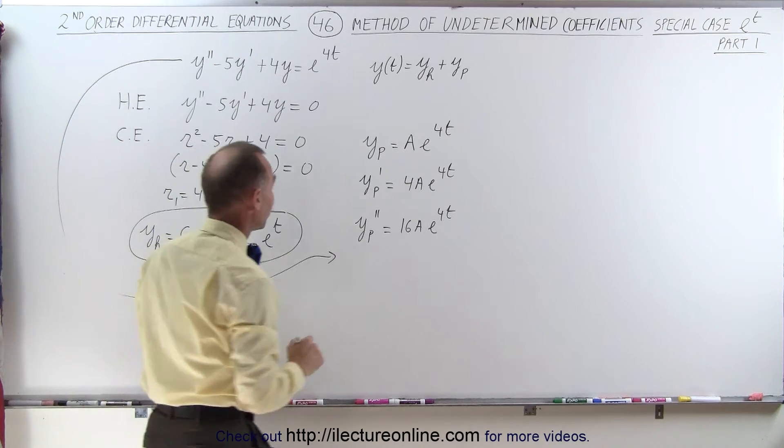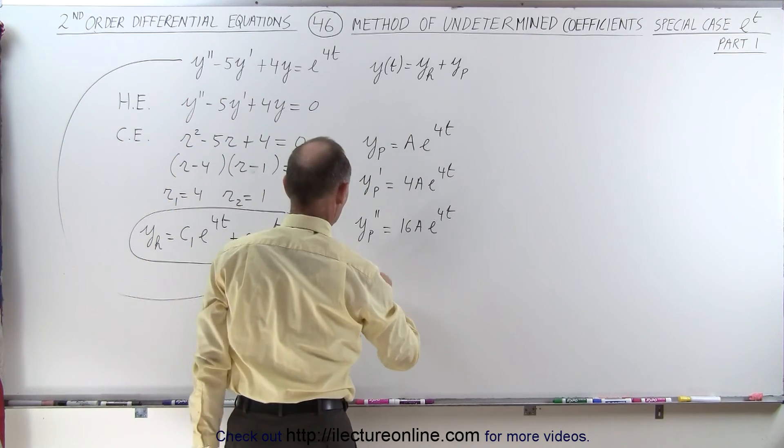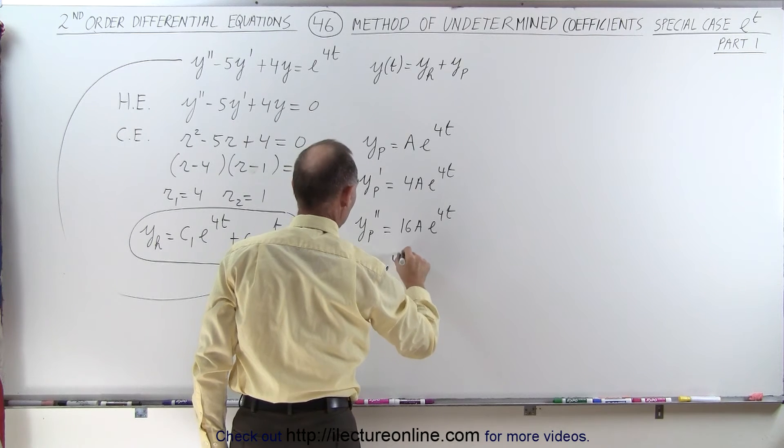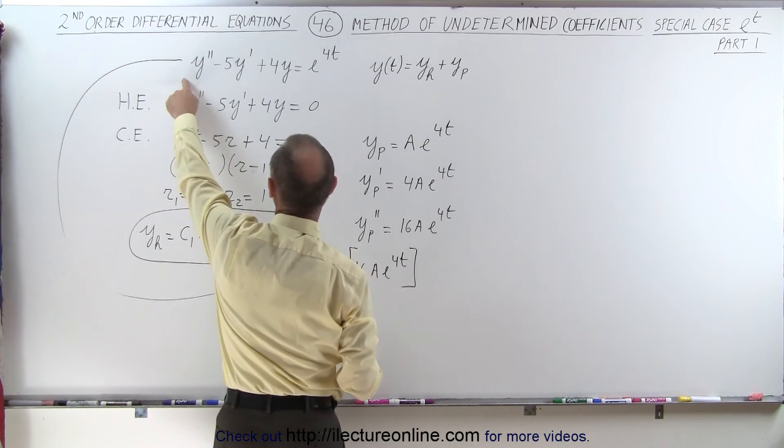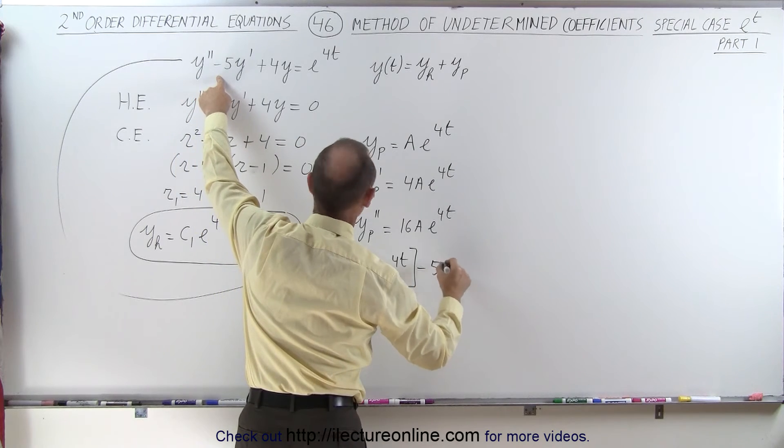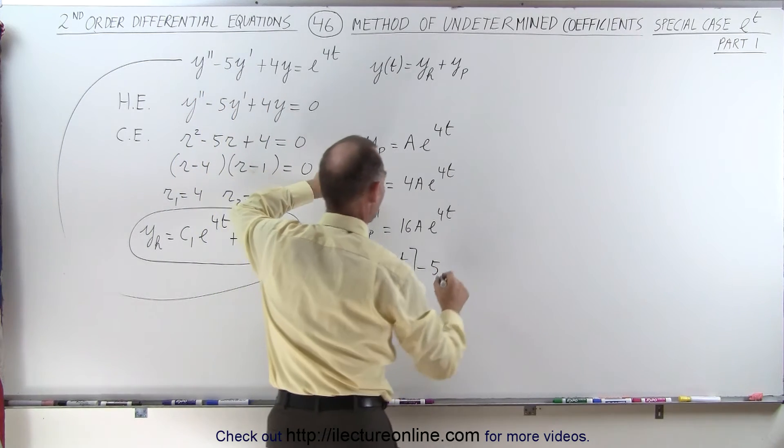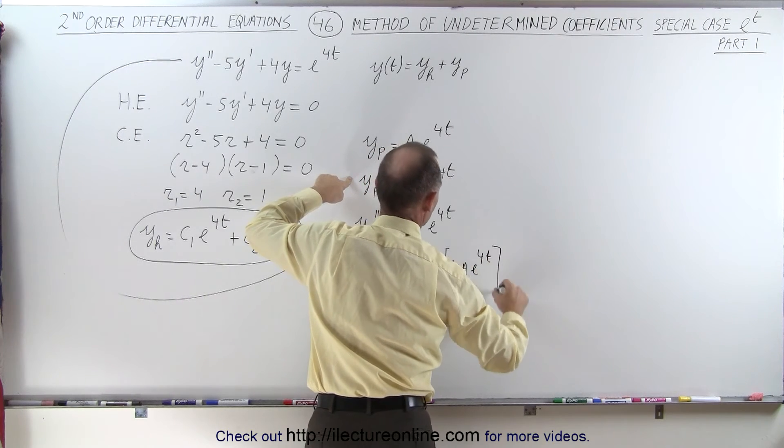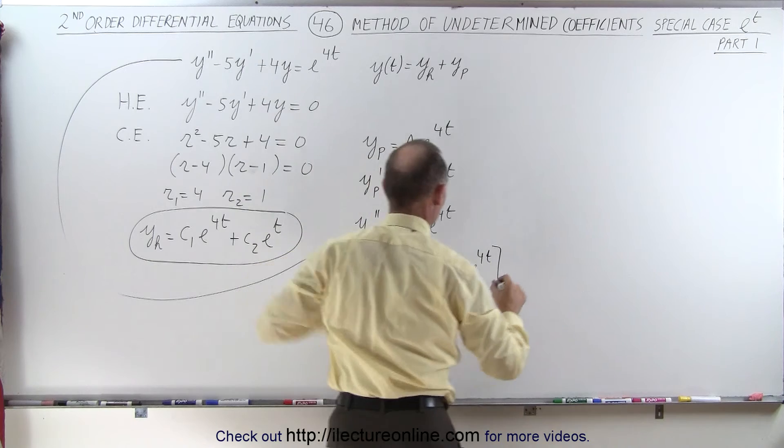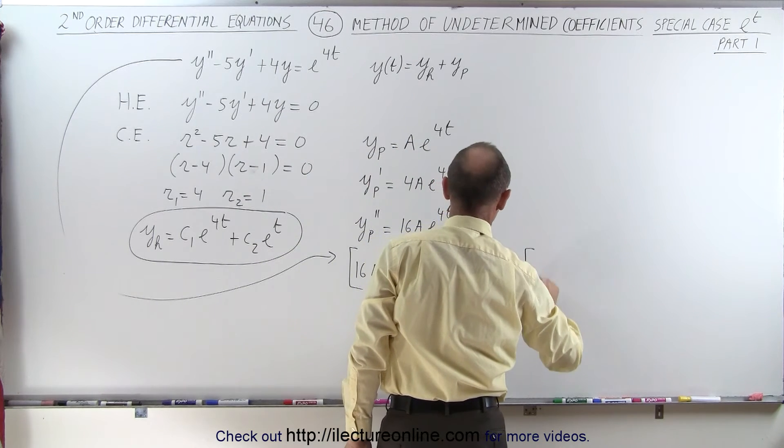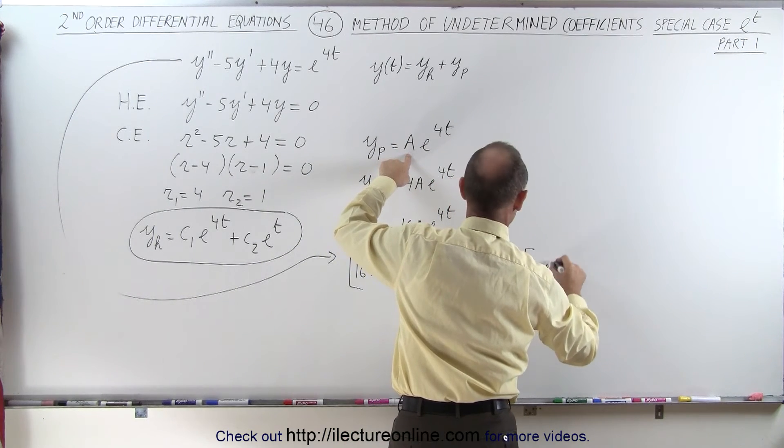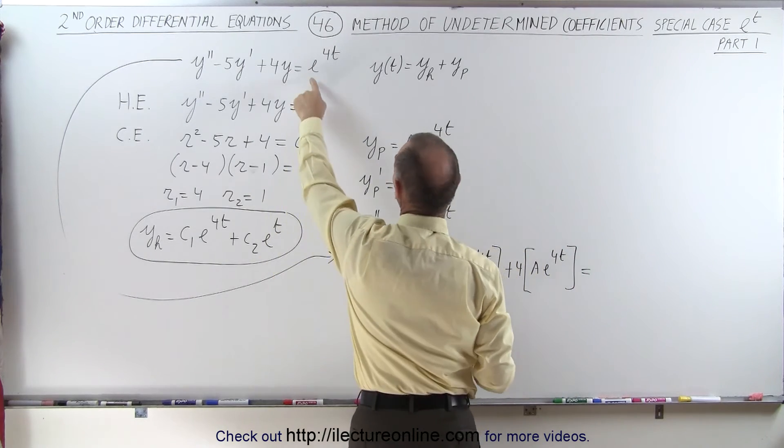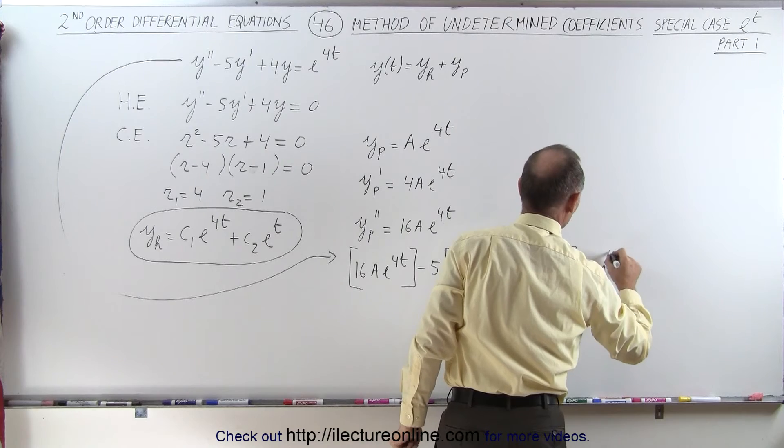And now let's see what happens. So we have y double prime, which is 16a e to the 4t. We'll put that in brackets, so this is y double prime, minus 5 times y prime, which is 4a e to the 4t, and plus 4 times y, which is a e to the 4t. And then we set that equal to the right side, which is e to the 4t.